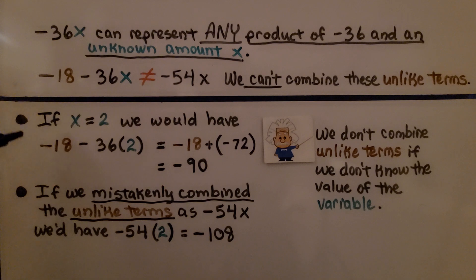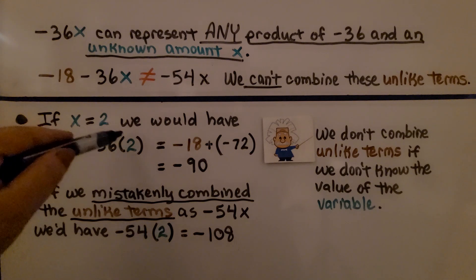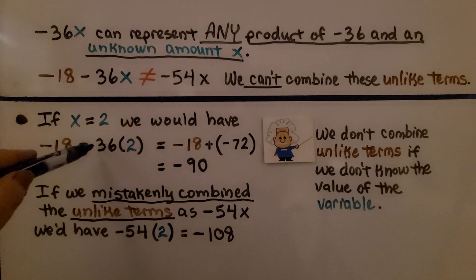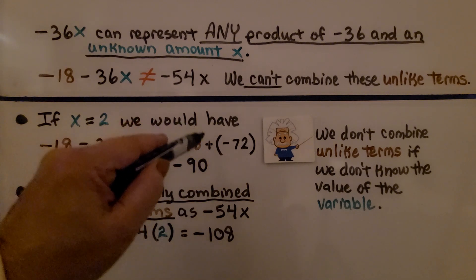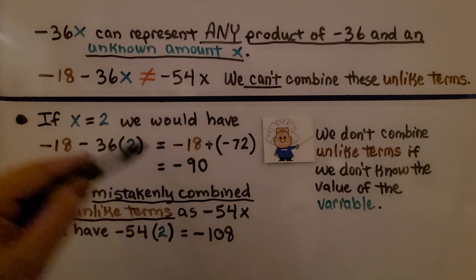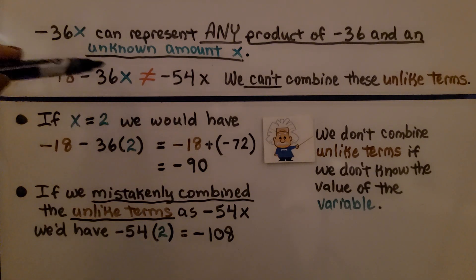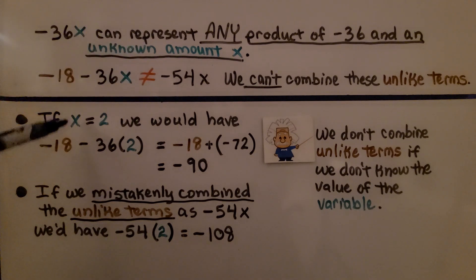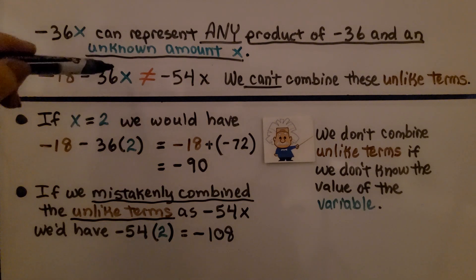If x equals 2, we'd have negative 18 minus 36 times 2. Order of operations says to multiply first: negative 36 times positive 2 gives negative 72, so we'd have negative 18 plus negative 72, which equals negative 90. If we mistakenly combined unlike terms as negative 54x and x equaled 2, we'd get negative 54 times 2 equals negative 108 — not negative 90. We don't combine unlike terms when we don't know the value of the variable.